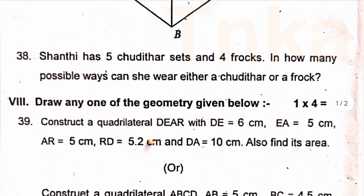Roman number 8, draw any one of the geometry given below. 39, construct a quadrilateral DEAR with DE equal to 6 cm, EA equal to 5 cm, AR equal to 5 cm, RD equal to 5.2 cm and DA equal 10 cm. Also, find its area DEAR.